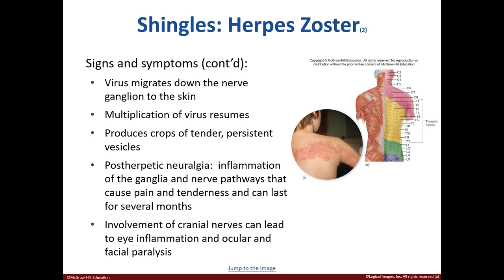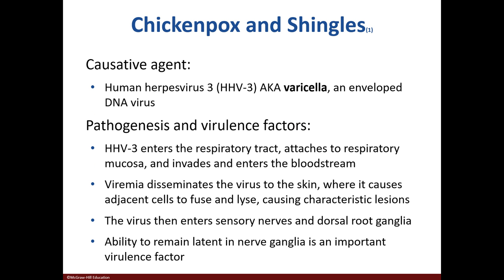Shingles patients exhibit tender vesicles and pain along the nerve endings. If the cranial nerves are affected, eye inflammation and ocular and facial paralysis may be seen. HHV-3, or varicella, is the causative agent of both chickenpox and shingles. The virus first enters the respiratory tract, then the bloodstream, and then enters the skin and nerve endings.